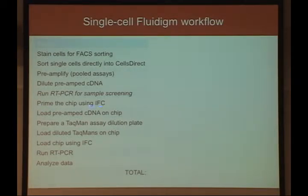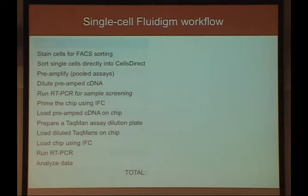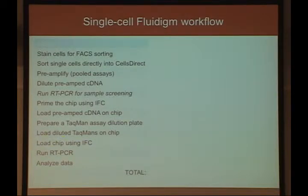Next you prime the chip — getting all chambers working and filled with buffer — then load the preamplified cDNA on one side and the assays from a dilution plate on the other. Loading the chip makes all fluidic connections in the instrument between reactions and samples, and then you run the PCR reaction and analyze your data.